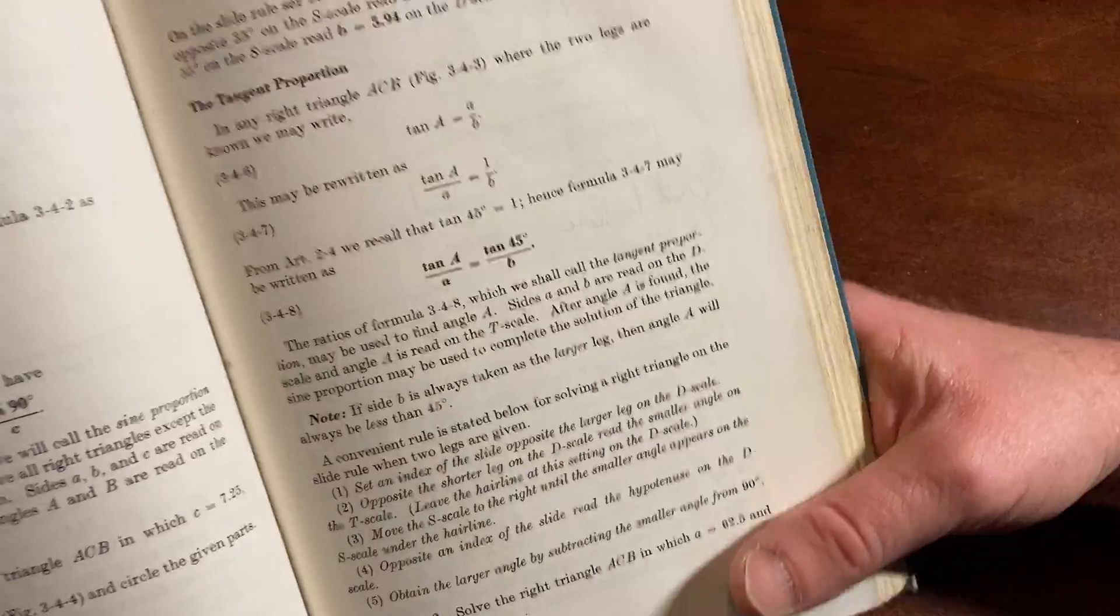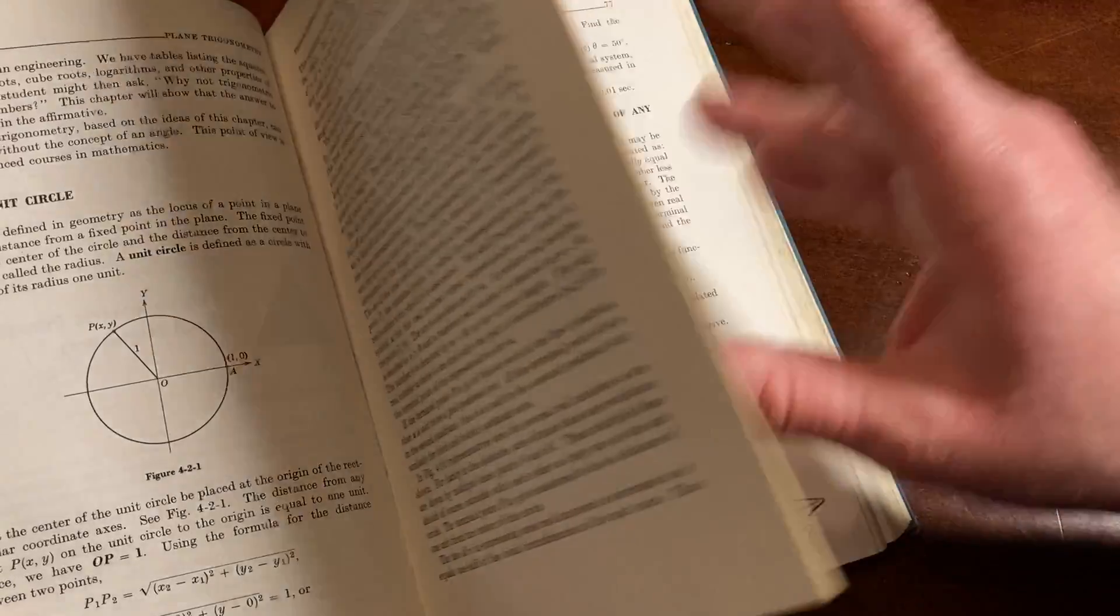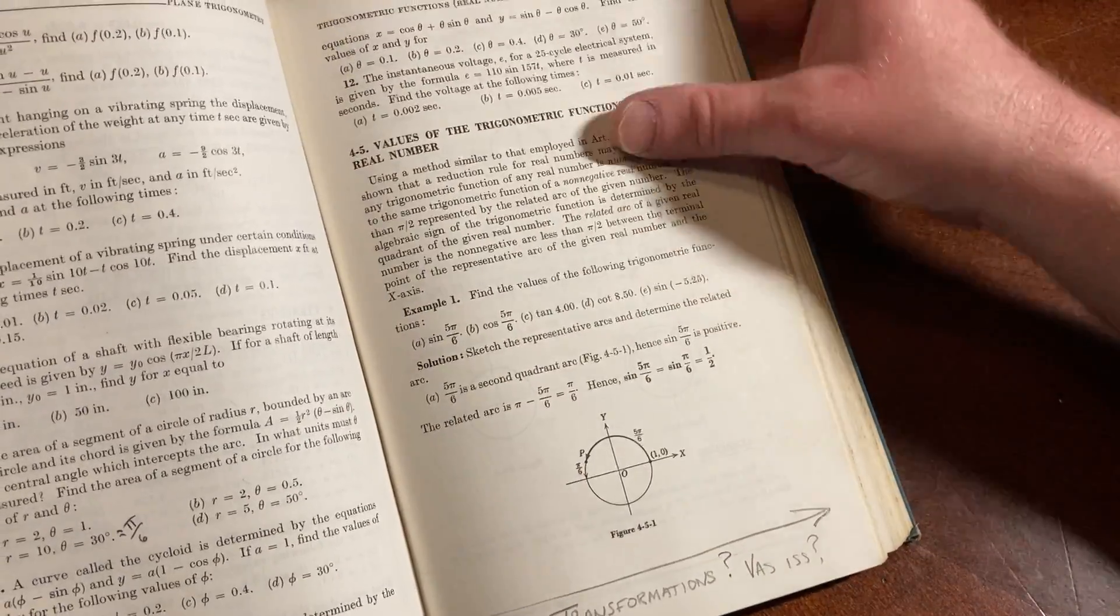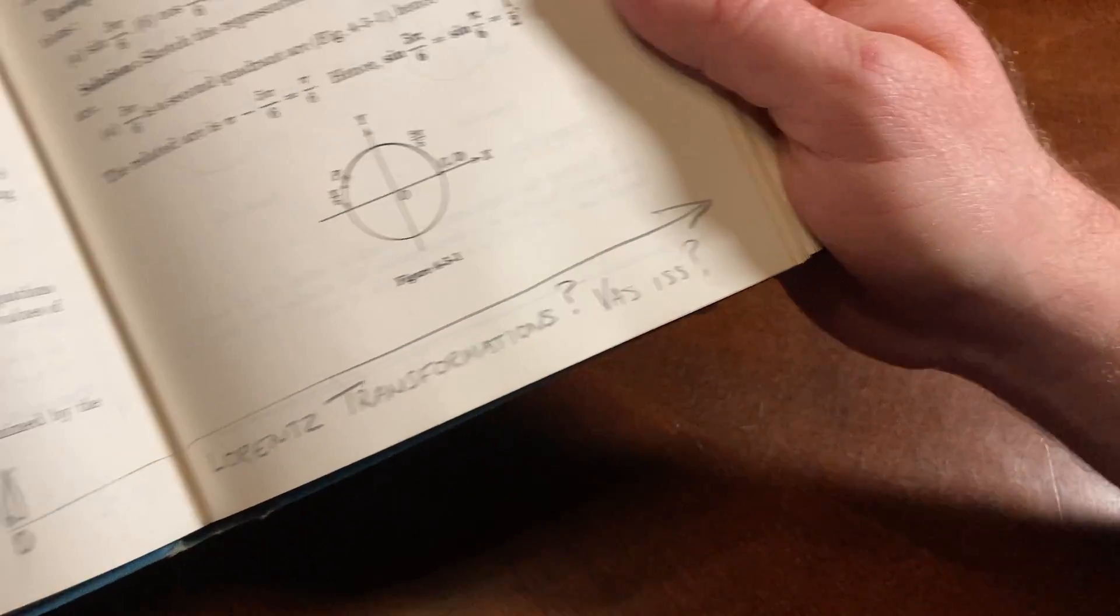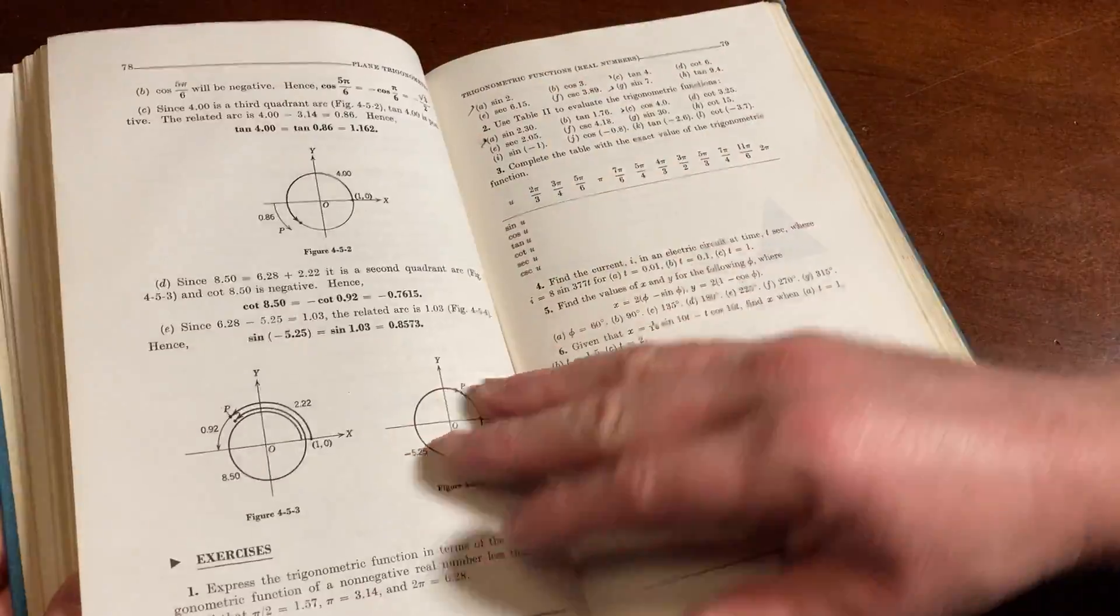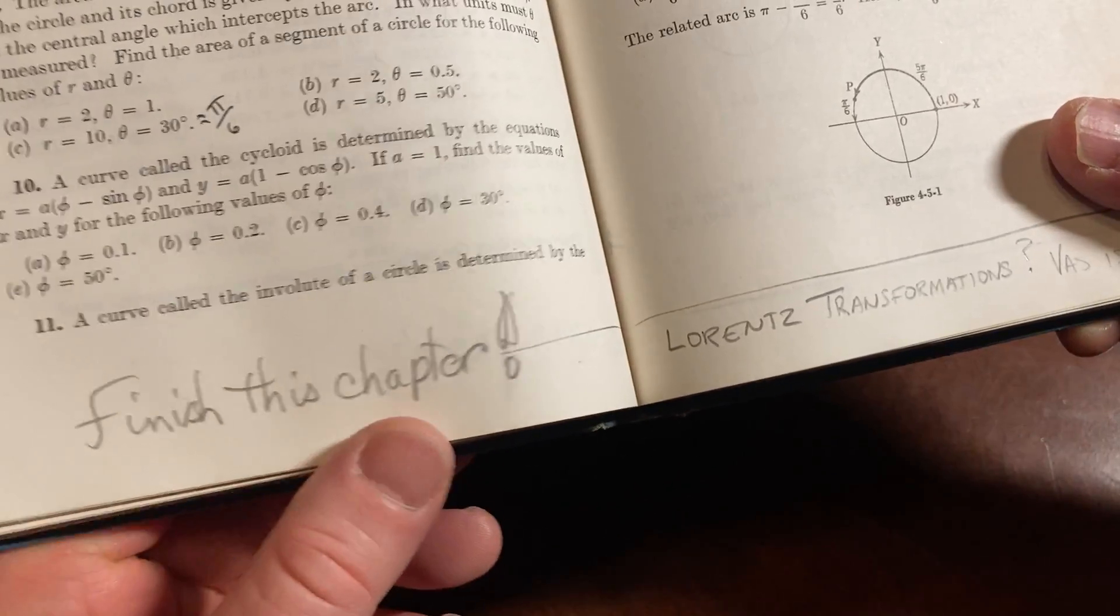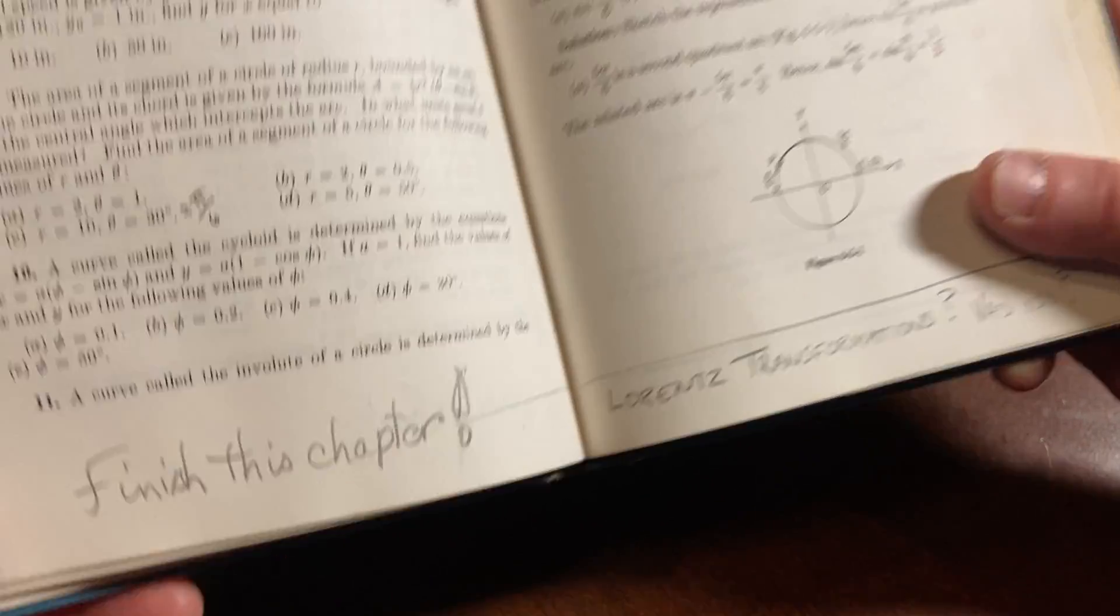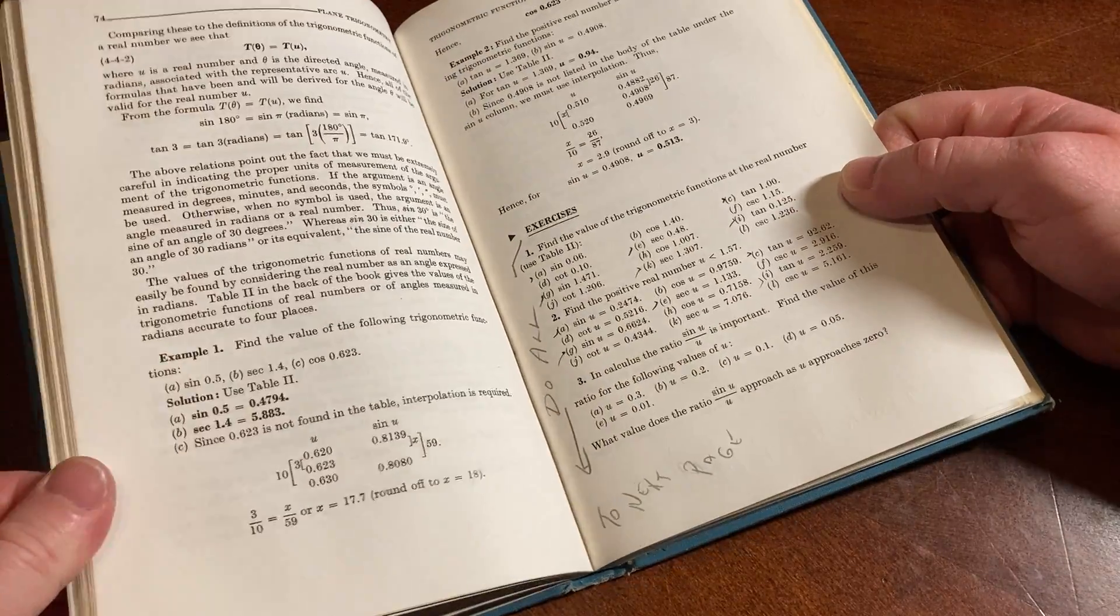Let's see what else we got in here. Here we've got some triangle stuff. The tangent proportion. Trigonometric functions of real numbers. Finish this chapter. Lorentz transformations. I wonder when this was written. It's really interesting. You see this, you wonder, who was this person who wrote, finished this chapter? These books, they have history.